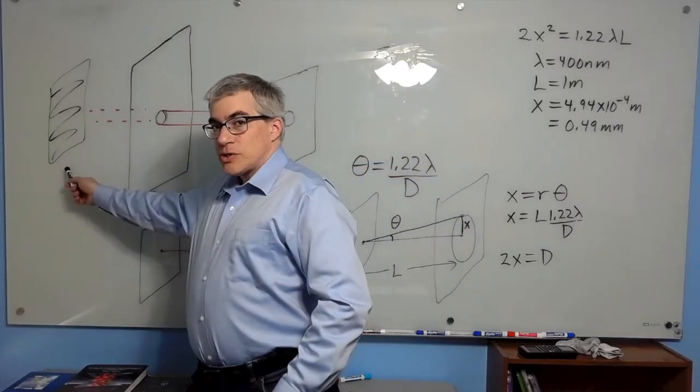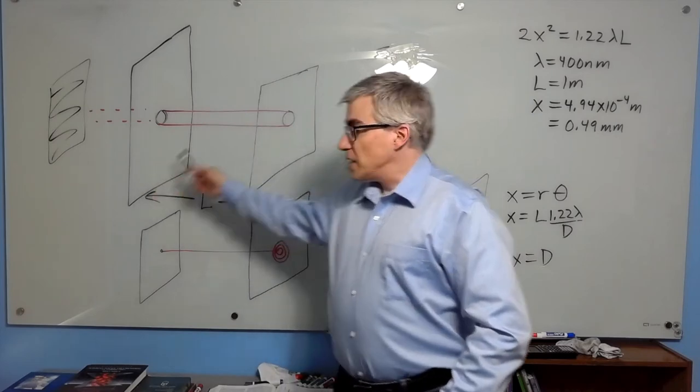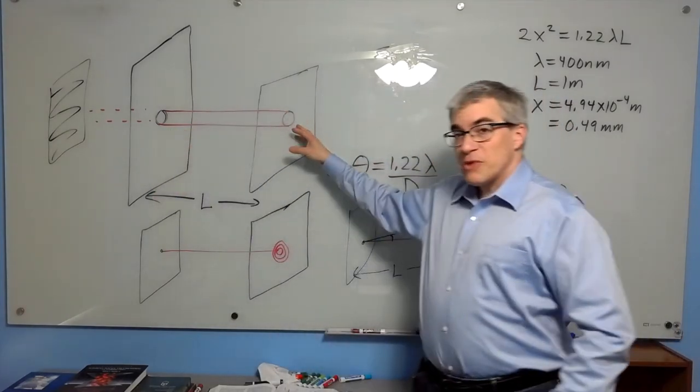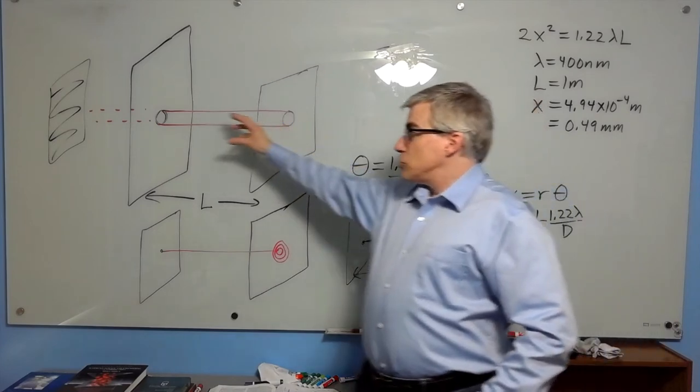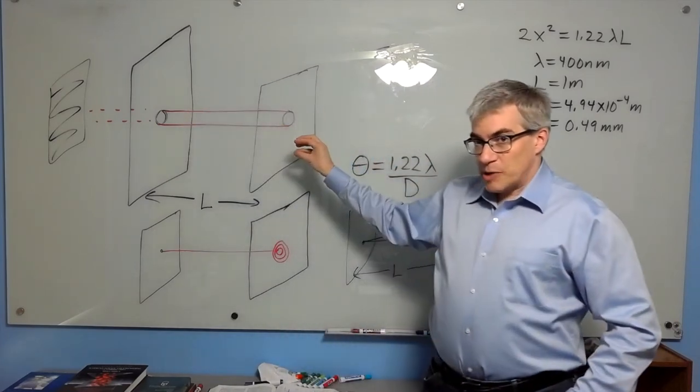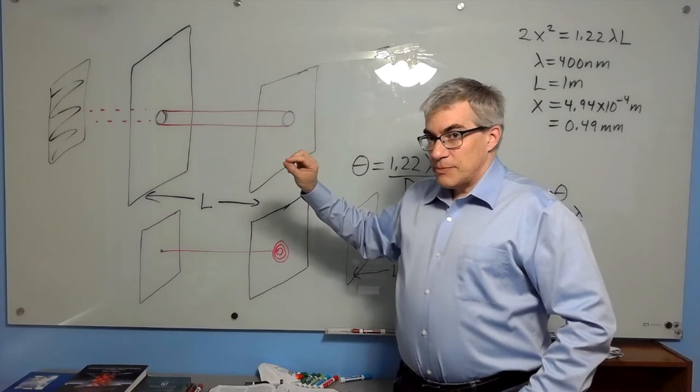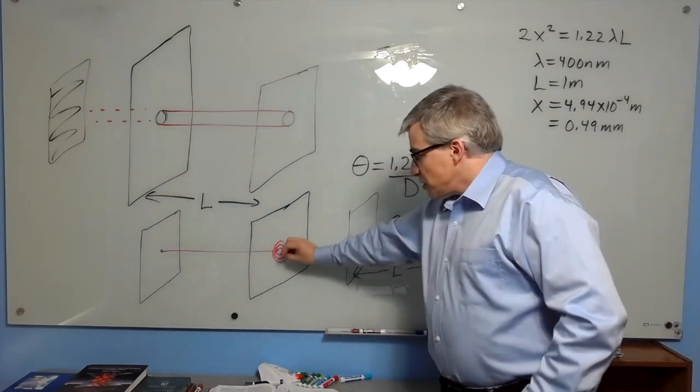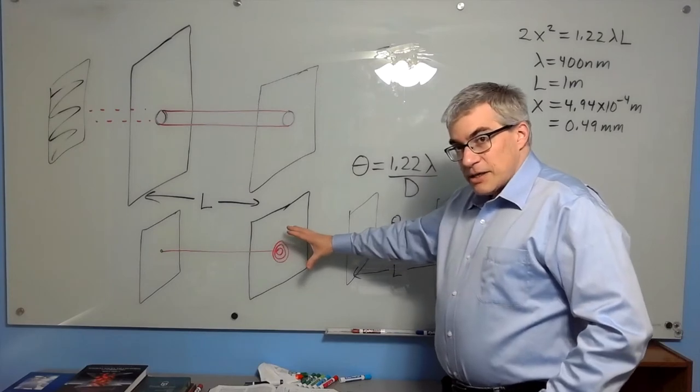Suppose you have a light source, a wall with a hole in it, and a screen. If you have a big round hole, you're going to get a big round spot of light on the wall. If you shrink the hole, you're going to get a smaller spot, but there's a limit to that because of diffraction. If you get all the way down to pinhole size, this starts spreading out again in a diffraction pattern.